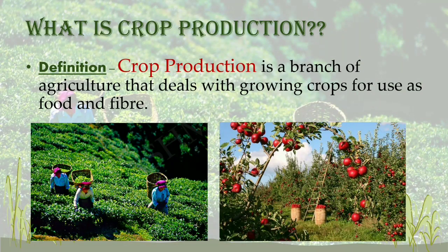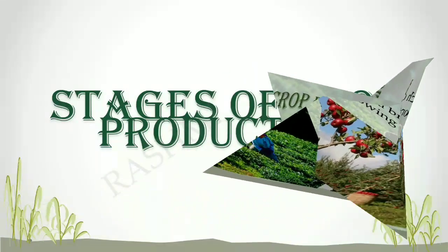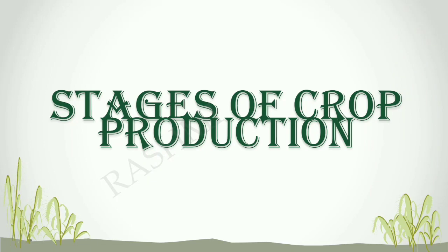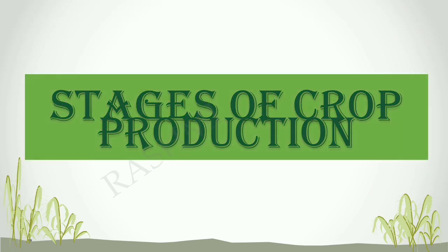Crop production is a branch of agriculture that deals with growing crops for use as food and fiber. Large tea plantations, coffee plantations, and rubber plantations are also found in India. Fruits and vegetables are also grown in plenty, with large fruit orchards in Himachal Pradesh, Kashmir, and Uttar Pradesh. Now let us understand the different stages of crop production.